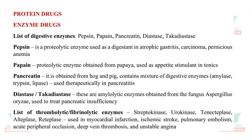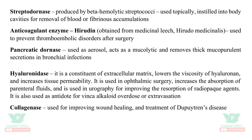Protein drugs are classified into different categories. Enzyme drugs include digestive enzymes: pepsin, papain, pancreatin, diastase, and tachadiastase. Pepsin is useful as a digestant in atrophic gastritis, carcinoma, and pernicious anemia. Papain, obtained from papaya, is used as an appetite stimulant in tonics. Pancreatin, diastase, and tachadiastase are used to treat pancreatic insufficiency. Thrombolytic and fibrinolytic enzymes — streptokinase, urokinase, tenecteplase, alteplase, reteplase — are used in myocardial infarction, ischemic stroke, pulmonary embolism, deep vein thrombosis, and unstable angina. Streptodornase, produced by beta-hemolytic streptococci, is used topically or instilled into body cavities for removal of blood or fibrinous accumulations.